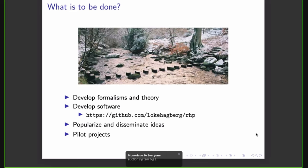So, what is to be done? Well, we have to develop formalisms and theory, which is happening, but there needs to be more of it. We need to develop software, so we have, as has already been mentioned by Leon, Dave and his student, Loke Hagberg, have been developing a thing called receding horizon planning, which is up on GitHub. We also need to popularize and disseminate these ideas, which is why we're having this discussion. And finally, we need pilot projects to basically see what works and what doesn't. One thing that struck me as well this morning, we need to study the history of planning, which is very poorly documented. Planning in the Soviet Union is not very well documented. And this is something that has to be dug into. And I've been doing this more recently. That's what I had to say.